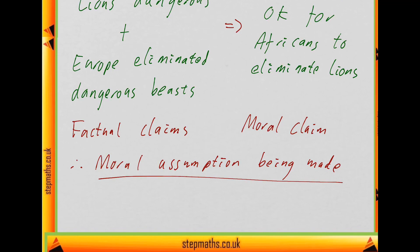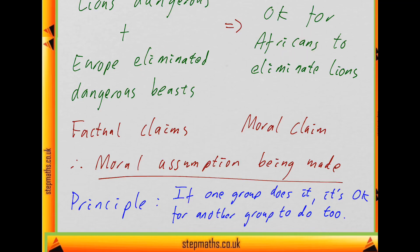And what exactly is that principle? Well, the principle is basically what Europeans did, it's okay for Africans to do. So the principle is basically if one group does something, it's okay for another group to do the same thing. So seeing as this is the principle underlying the argument, let's have a look at the options and see if any of them is a flaw that would undermine this.